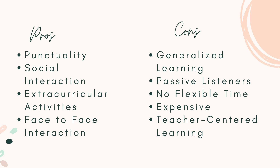Next, we have passive listeners. In a traditional classroom setting, students are typically expected to listen attentively to the teacher's lectures. This can foster a passive learning environment where students may not actively engage with the material or participate in critical thinking, limiting their ability to develop independent thinking skills and creativity. Next is no flexible time — traditional education often follows a fixed schedule, requiring students to attend classes at specific times, which can be challenging for students with other commitments or who prefer to learn at their own pace. It may also limit opportunities to explore personal interests outside of the set timetable.